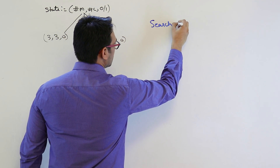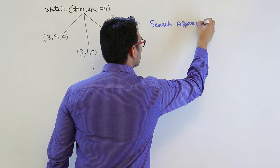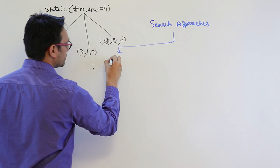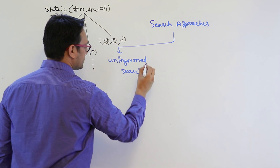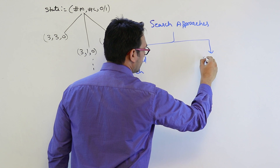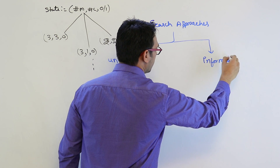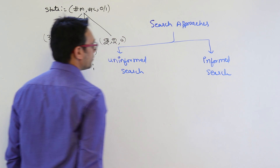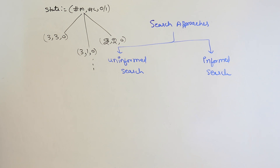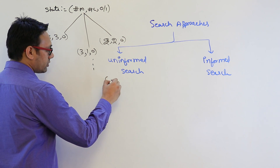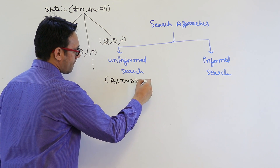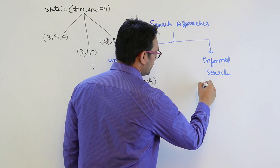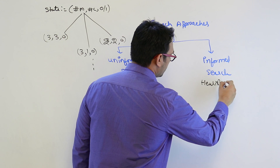To solve these problems, there are two types of search approaches. Number one is uninformed search, and the second is informed search. The uninformed search is also called blind search, and the informed search is also called heuristic search.